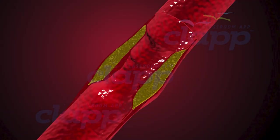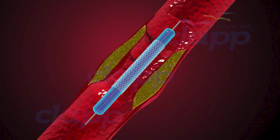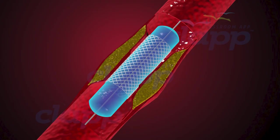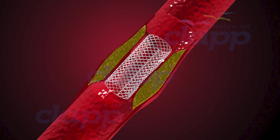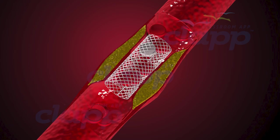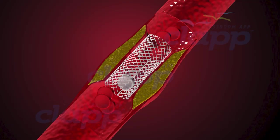In cases where a stent is needed, a stent catheter is introduced. This specialized catheter delivers and deploys the stent, which acts as a supportive structure to keep the artery open. This tiny mesh tube is expanded within the vessel, acting as a scaffold to prevent re-narrowing and maintain proper blood flow. Medicines applied on the stent will prevent re-accumulation of plaque in that area. Angioplasty can provide immediate relief by improving blood flow to the heart, reducing symptoms, and enhancing overall heart function.